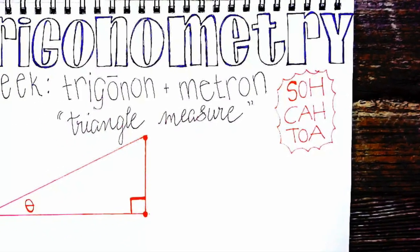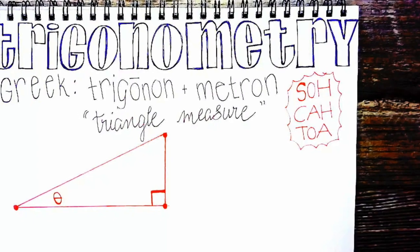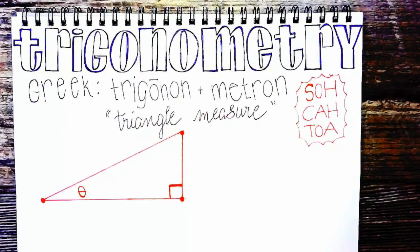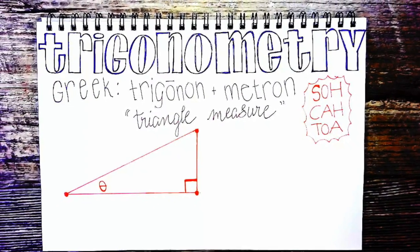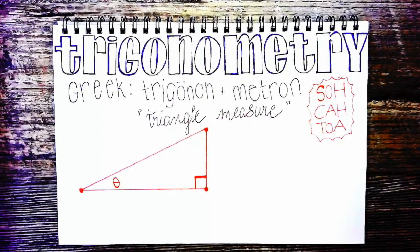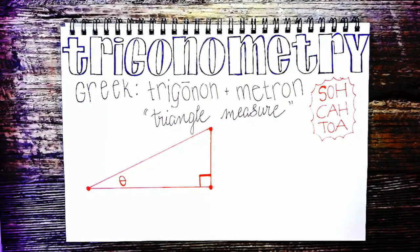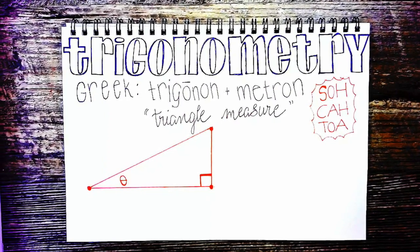A triangle consists of three sides and three angles, and those three angles add up to 180 degrees with one angle being 90. That means the other two angles add up to 90 degrees.